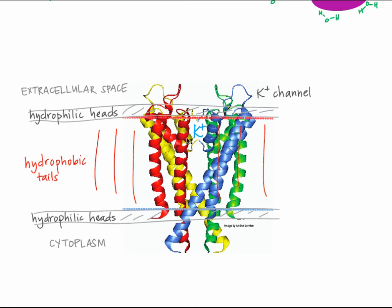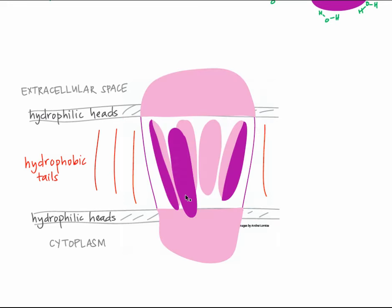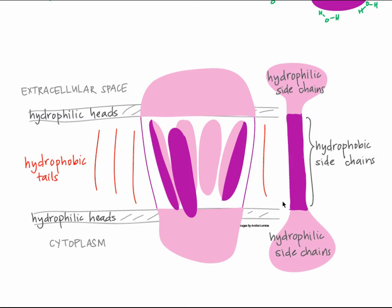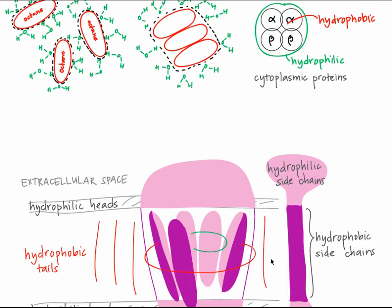Once inside the channel, potassium forms favorable interactions with the sides of the alpha helices that line the channel. These transmembrane alpha helices have one face that is hydrophilic and can interact favorably with potassium. The dark purple indicates sides of the alpha helices with hydrophobic side chains that interact with the hydrophobic phospholipid tails, while the light purple represents sides with hydrophilic side chains that interact favorably with potassium. Unlike single-pass transmembrane alpha helices, which have all hydrophobic side chains, alpha helices in potassium channels have one hydrophobic side and one hydrophilic side. As a result, the transmembrane domain of channel proteins is inverted relative to cytoplasmic proteins.